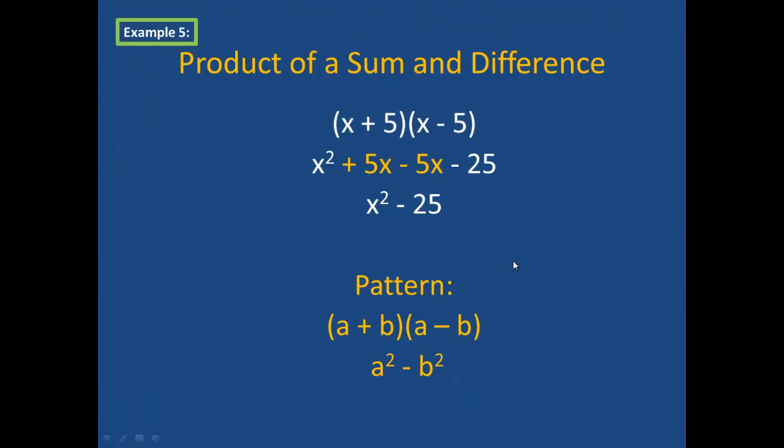Our last example is also a special product, and this is called the product of a sum and a difference. Notice that the first terms are the same, both x, and the second terms are the same except for their sign. One binomial is a sum, and the other binomial is a difference. So if I multiply these out, and I could use distributive or box, whichever method you like, x times x is x squared, x times negative 5 is negative 5x, 5 times x is 5x, and positive 5 times negative 5 is a negative 25. Notice that the middle terms are the same except for their sign. Therefore, they will cancel each other out, and my resulting product will be x squared minus 25.